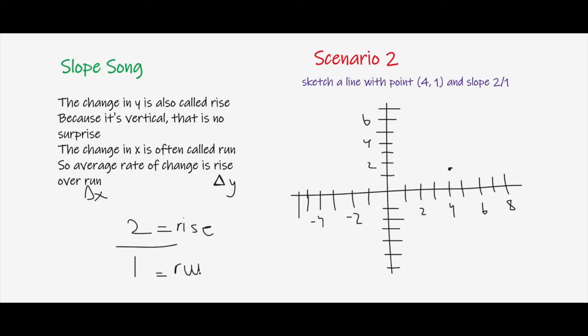So what we do when we have rise over run is we look at the rise first. The rise equals 2. So we have to move this point up by 2. So we get 3 as the y coordinate.